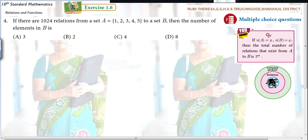If N of A equal to P, N of B equal to Q, then the total number of relations that exist from A to B is 2 to the power of PQ. PQ is nothing but 2 to the power of N of A cross B.